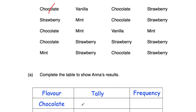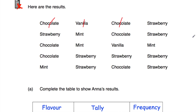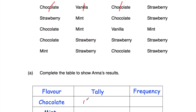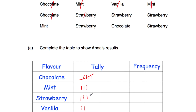Going through the flavours: chocolate, vanilla, chocolate, and carrying on. After completing all the tallies, let's fill in the frequency column. Chocolate: five plus one is six. Mint: four. Strawberry: five plus another three is eight. Vanilla: two. Let's check they add to 20: six plus four is ten, plus eight is 18, plus two is 20. That's correct.